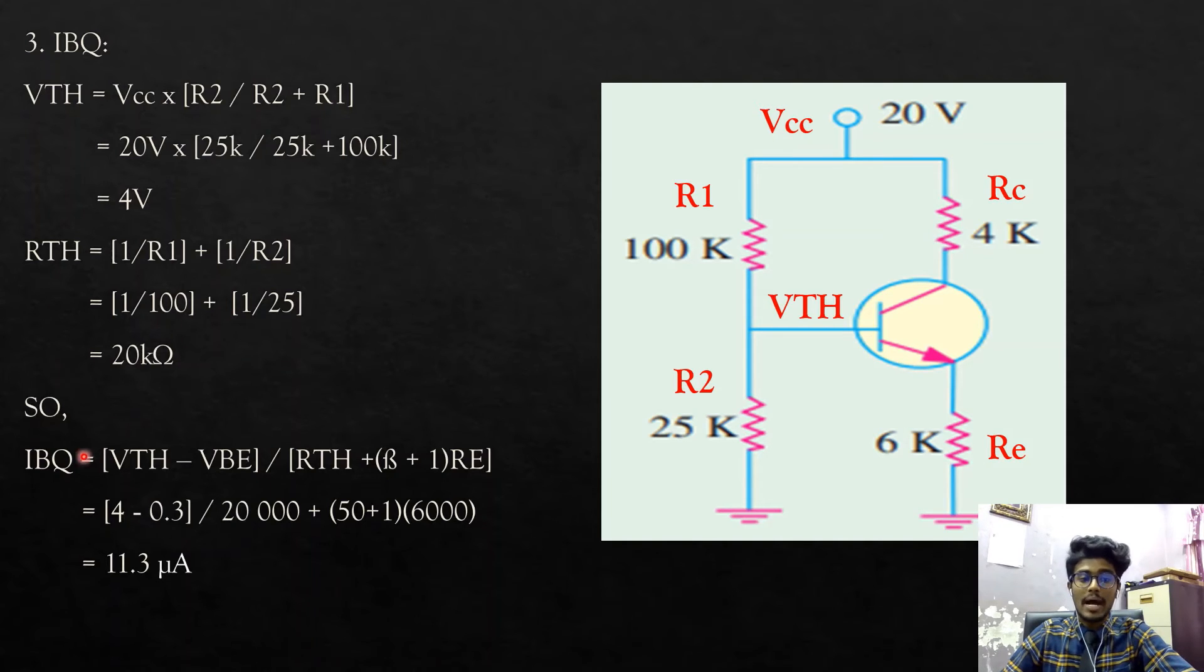So, IBq is equal to Vth minus Vbe over Rth plus beta plus 1 times Re. As I told you before, the Vbe and beta were already provided in this question, so we just substitute the value in this formula and we will get IBq is equal to 11.3 microampere.